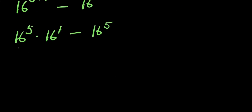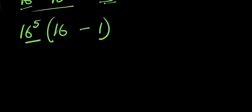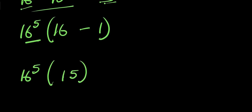We have 16 power 5 here and 16 power 5 here, so we factor it out. This gives 16 power 5 times (16 minus 1), and dividing out the common factor leaves 16 minus 1 inside the bracket, which equals 15. So we have 16 power 5 times 15.